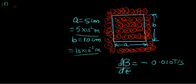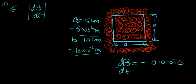The first part of the problem asks us to calculate the EMF induced in the loop. We just want the magnitude of the EMF, and we know that EMF is given by dΦ/dt. Since we just need the magnitude, we're going to take its absolute value — we don't really need to worry about the negative sign for now.